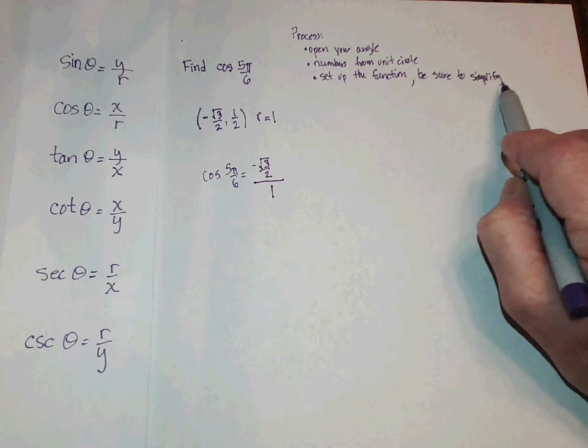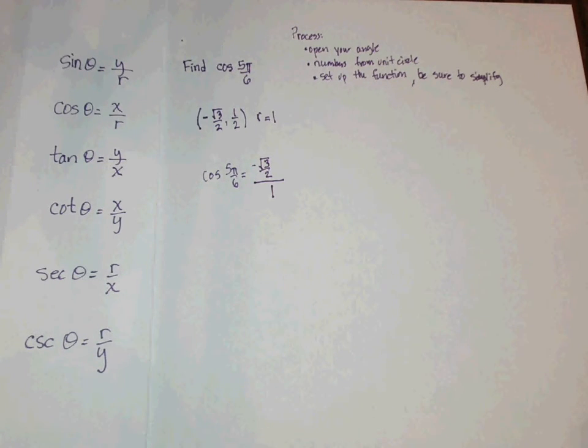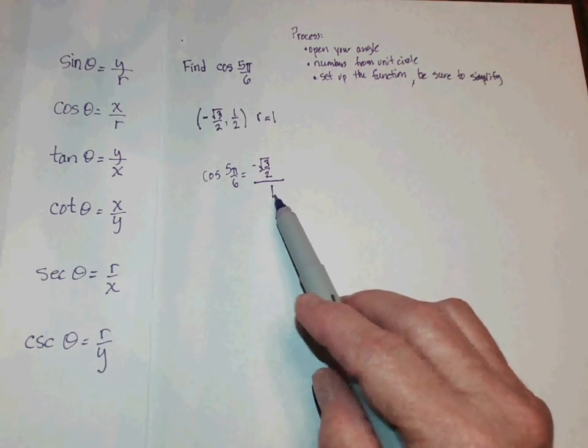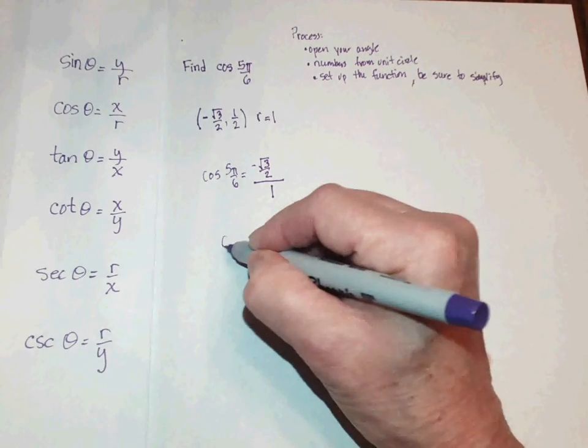We have to be sure to simplify. If we have a one in the denominator, we don't even need to look at it, so this simplifies.